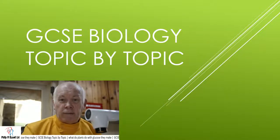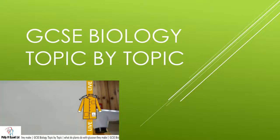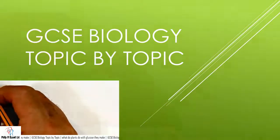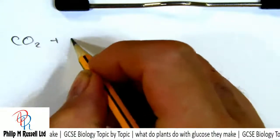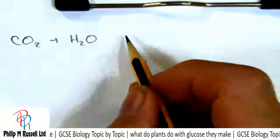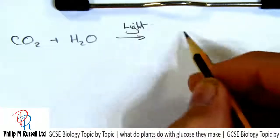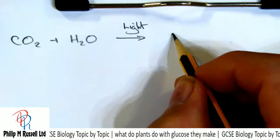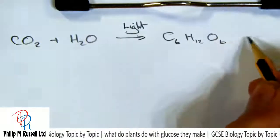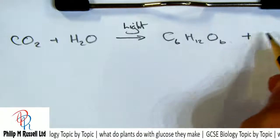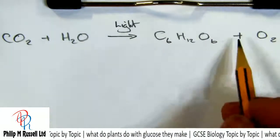Last time we had a look at photosynthesis. We took carbon dioxide, we took water, and in the presence of light we turned that into glucose — C6H12O6 — plus we made as a byproduct oxygen, which we didn't really want.